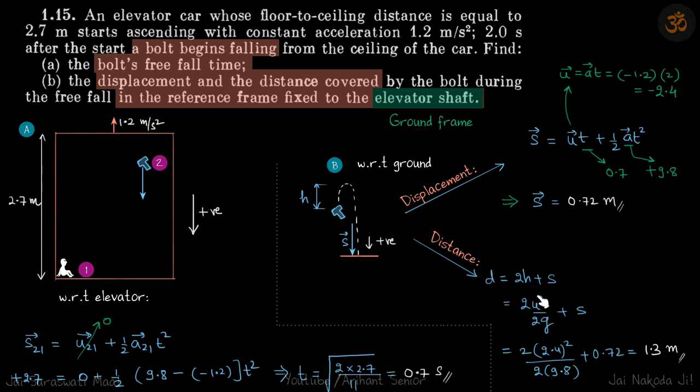Once again, because the bolt was falling within an elevator, it was easier for us to solve it with respect to the elevator because the initial velocities were zero with respect to each other. From here we got the time of fall, and in the second equation we know the initial velocity and we know the time of fall, so we could easily calculate the displacement and the total distance.